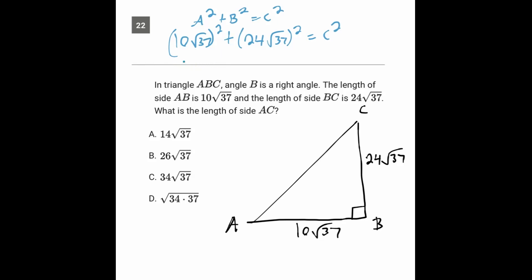We have 100 times 37 plus 24 times 24, which is 576, also times 37. So C² equals 100(37) plus 576(37). Instead of putting that in the calculator, I can say this is 676(37).